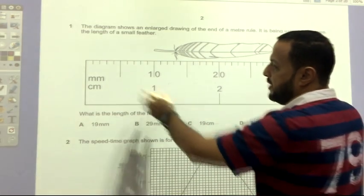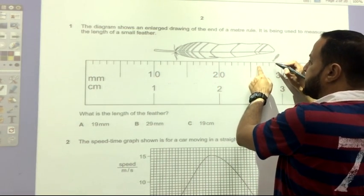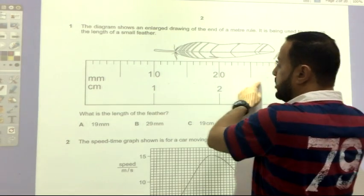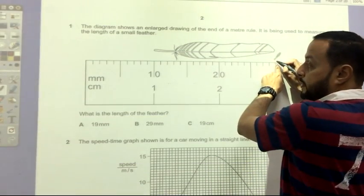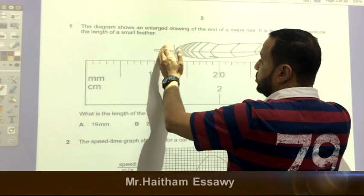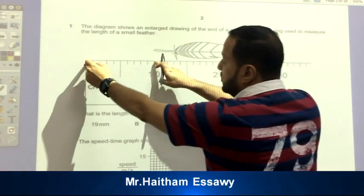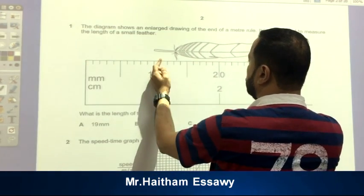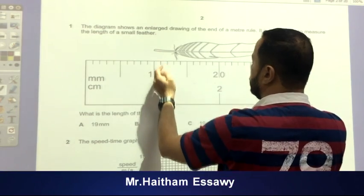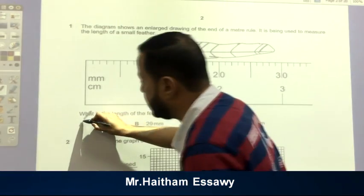Why 29? Because we have 10, 20, 25, 26, 27, 28, 29. Right? So this is 29 from the beginning to here. And here we have 10. To determine the length of this small feather, we'll subtract 10 from 29 to get the length. So it will be 29 minus 10 equal 19 millimeters. And this is the right answer.